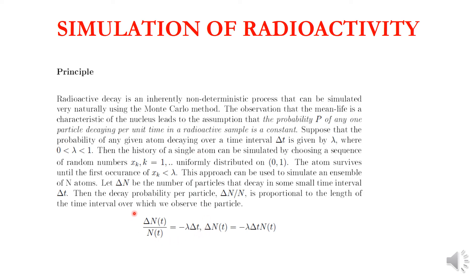That is the solution; let's also write the differential form. The differential form is dN over N equals minus lambda dt. For a small interval delta t, we can replace dN with delta N, so delta N over N equals minus lambda delta t. This means delta N equals minus lambda delta t times N.